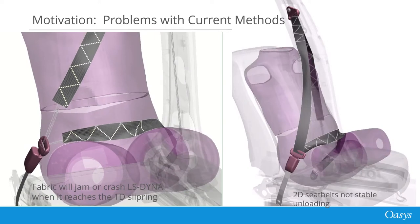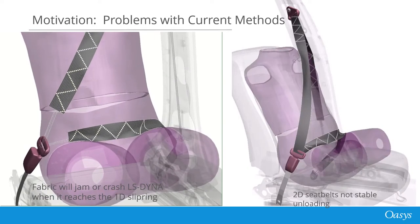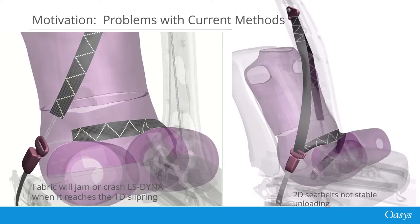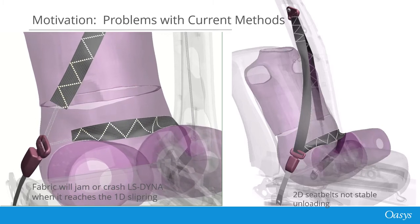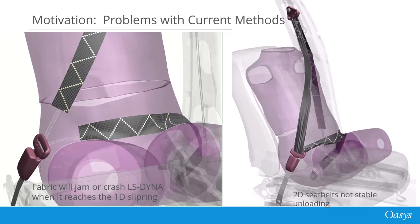A common problem with 1D slip rings is belt run out, as shown on the left. We need fabric shells for contact to the dummy abdomen, but fabric doesn't pass through the 1D slip ring when the pretensioner pulls the belt in.